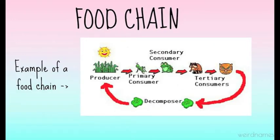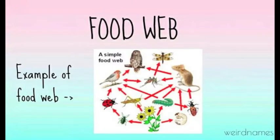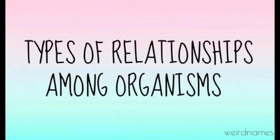This is another example of a food chain — to make it easy, it's just a cycle. A food web is composed of interconnected food chains. The grazing food web begins with green plants and algae, while the detrital food web begins with organic matter. Here is an example of a food web — take a look and analyze it.